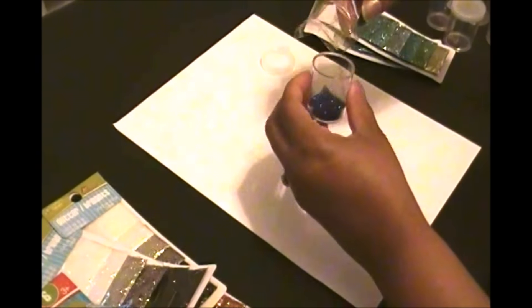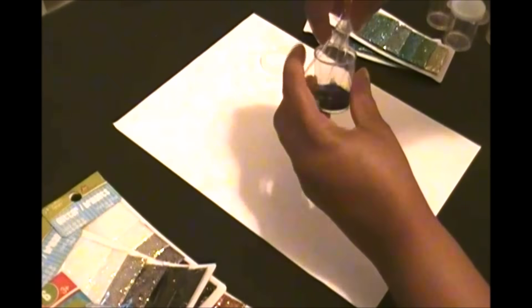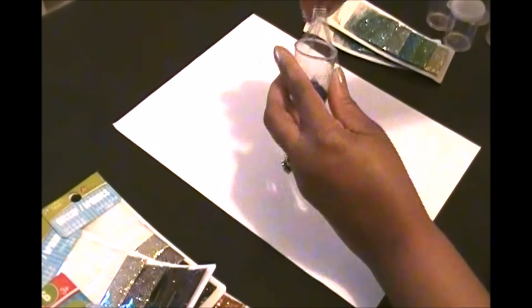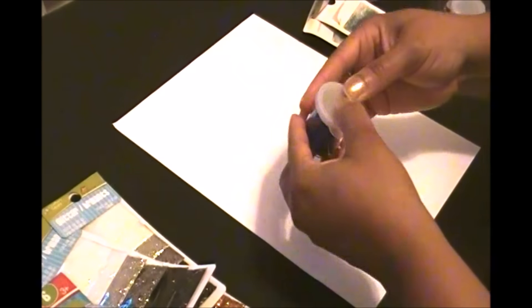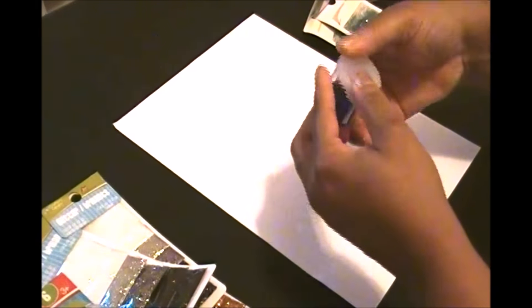Now do the same thing with the second package—not the second color, the second package—and add it right into the container. After you're done with that, you just recap it and set it to the side and get to working on your next color.